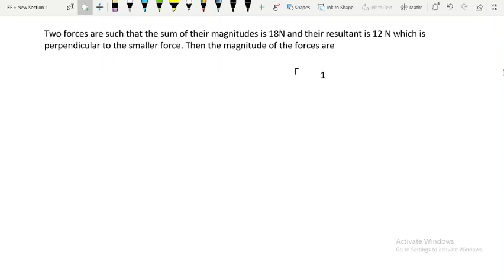So my forces are F1 and F2, and I know that F1 plus F2 is equal to 18 Newton. These are the magnitudes. Their resultant is 12 Newton. Ka matlab kya hai ki F1 square plus F2 square plus 2 F1 F2 cos theta must be equal to 12 Newton, yani ki 144 ye hoonna chahiye.